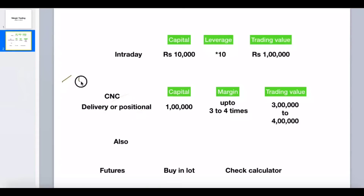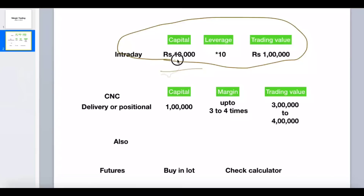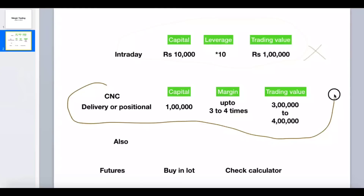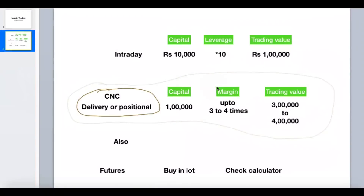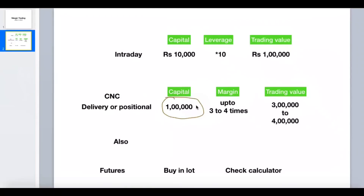For example, in intraday you took a position expecting 0.3%, but the stock went down because of some market news. You know the stock is good and it will come back, but the trading day has ended. In this case you can't do anything — you have to square off and book your losses. But if you are very confident, that's when you carry forward your position by taking a CNC, delivery, or positional order — and with margin from Angel Broking or Upstox, three to four times.